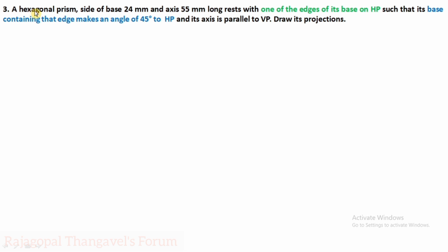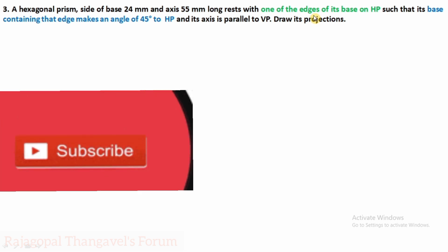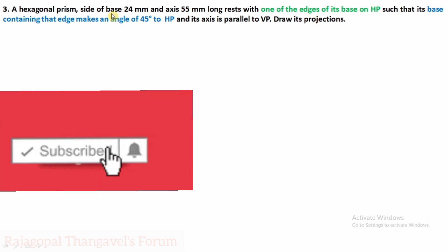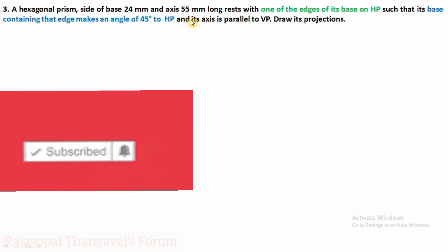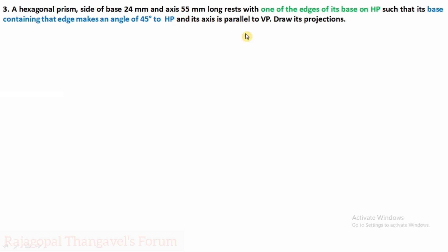Read the question: A hexagonal prism with side of base 24 mm and axis 55 mm long rests with one of the edges of its base on HP such that its base containing that edge makes an angle of 45 degrees to HP and its axis is parallel to VP. Draw its projections.